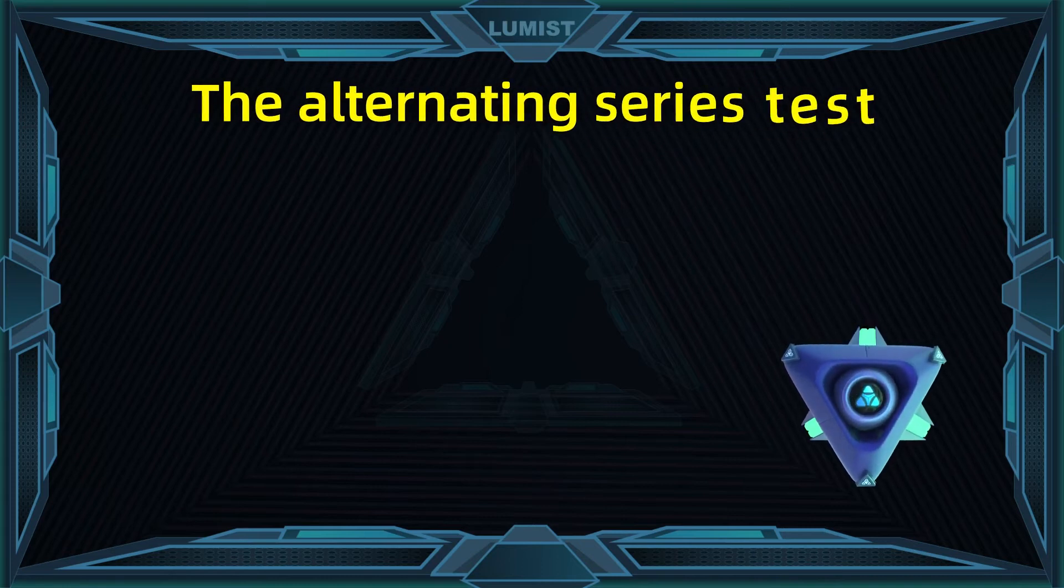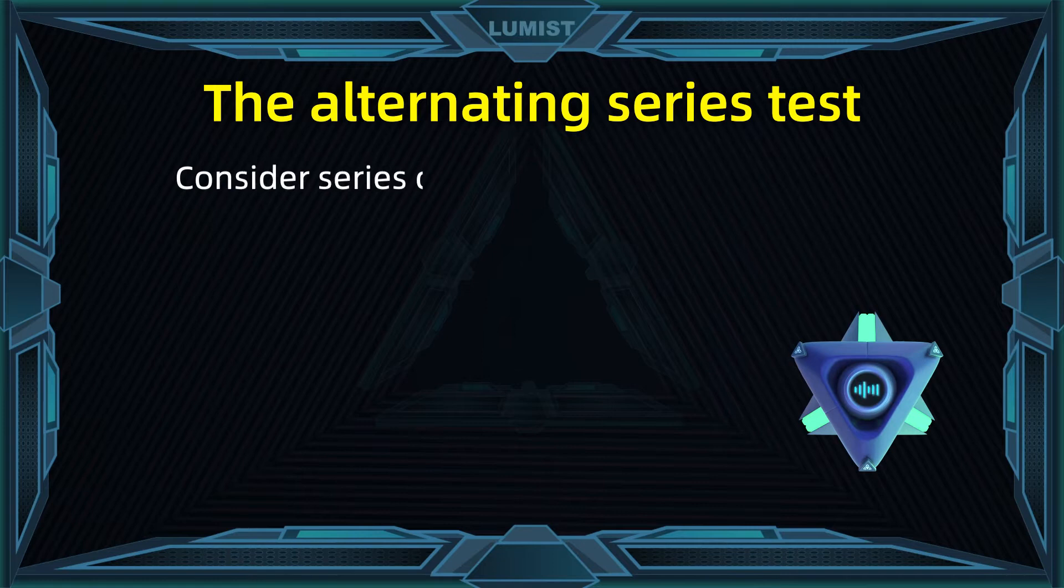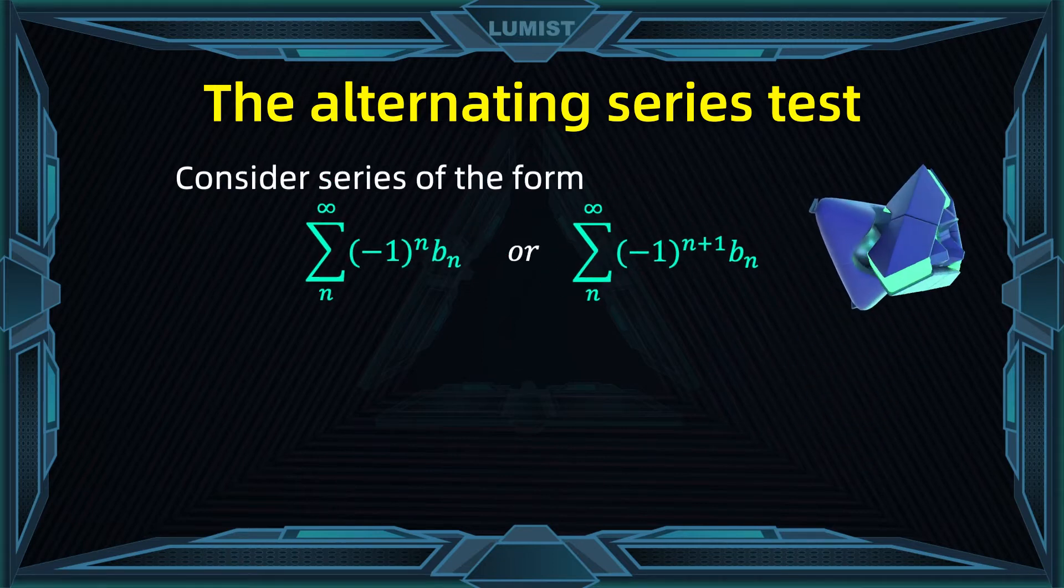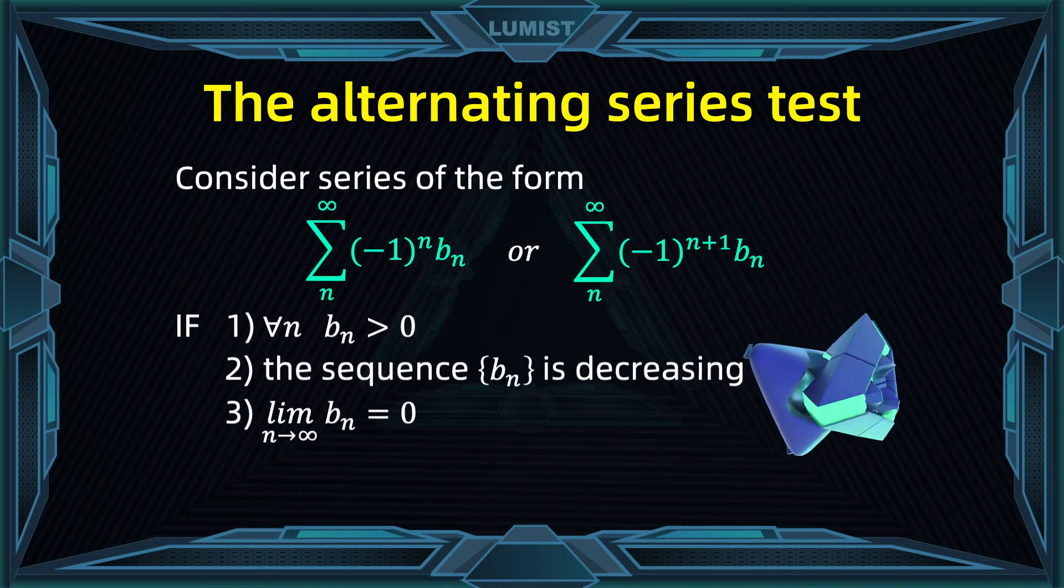First, we recall what the alternating series test is. When we're dealing with an alternating series of the form series of minus one to the n times bn, this sequence bn satisfies the following three conditions.